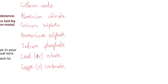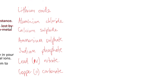Here we have a number of ionic substances. So we have lithium oxide, aluminium chloride, and these ones here. Hopefully you've memorized the ion table, and so you should know that lithium oxide is made up of lithium 1+ ions and oxide 2− ions. The magnitude of charge for the lithium is 1 and the magnitude of charge for the oxide is 2.